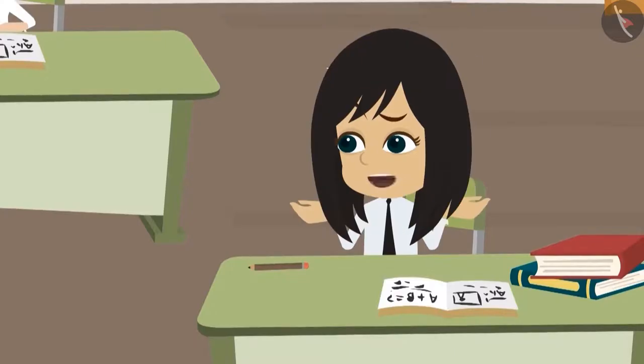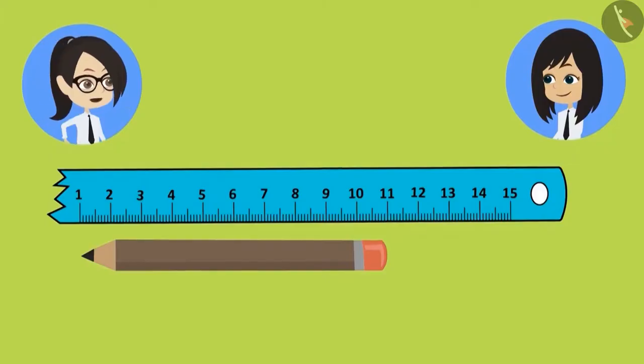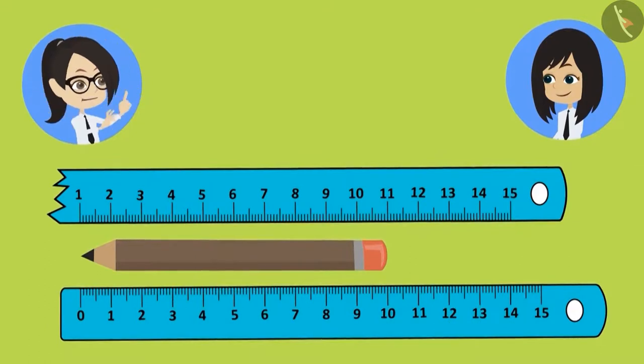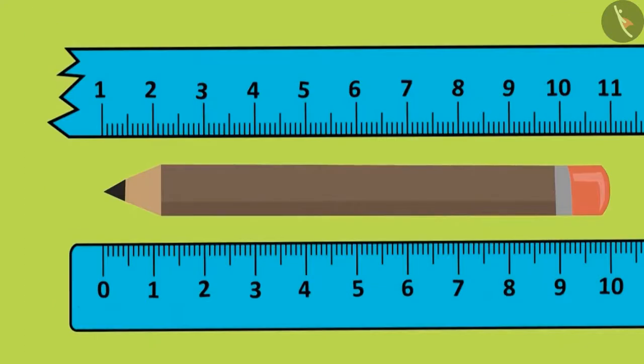It means we have made some mistake. Let's do one thing. Let's try to measure this pencil with the correct scale, then we might come to know our mistake. I will start counting again. Wait. What happened? Look, the correct scale has a 0 written at the starting point. While measuring with the broken scale, we are starting from 1.